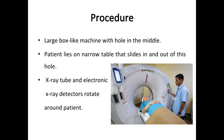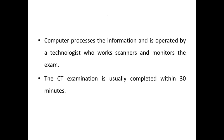Depending on the type of CT scan, the machine may make several passes. The patient may be asked to hold their breath during scanning, as any motion including breathing and body movements can lead to artifacts on the images. As the table moves into the scanner, the detectors and x-ray tube rotate around the patient, and each rotation yields several images of thin slices of the body. The patient may hear buzzing and whirring noises. A technologist in a separate room can see and hear the patient via intercom. When the exam is complete, the technologist verifies the image quality before concluding; the CT examination is usually completed within 30 minutes.